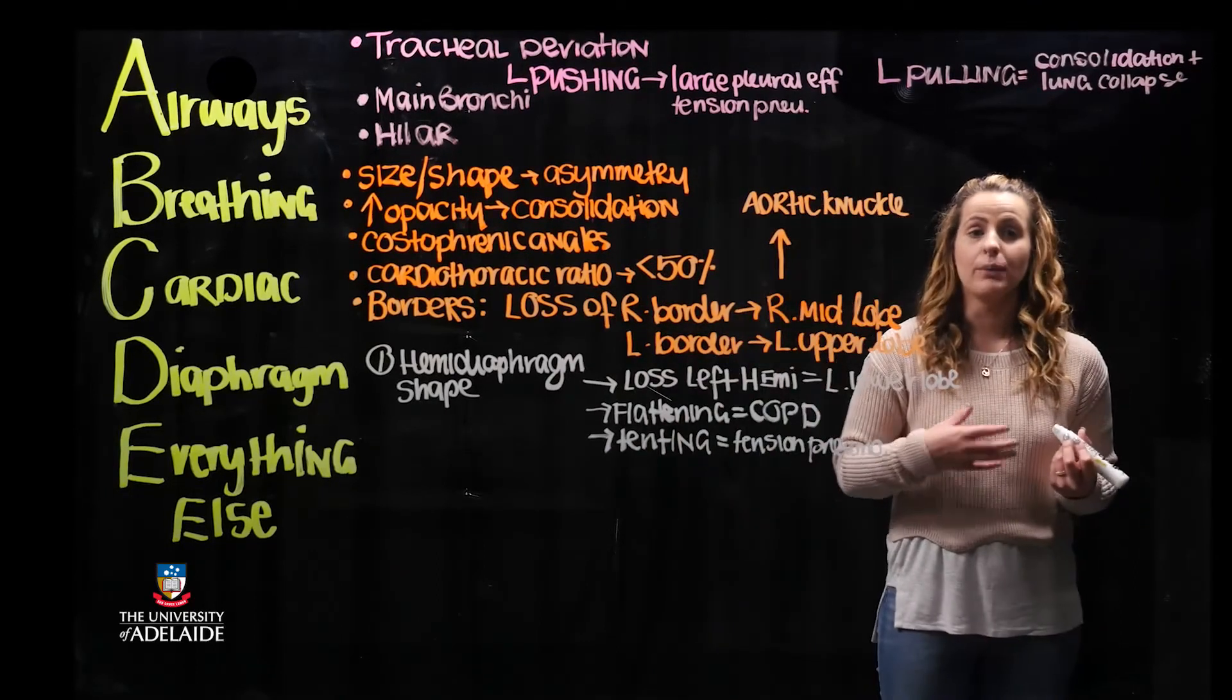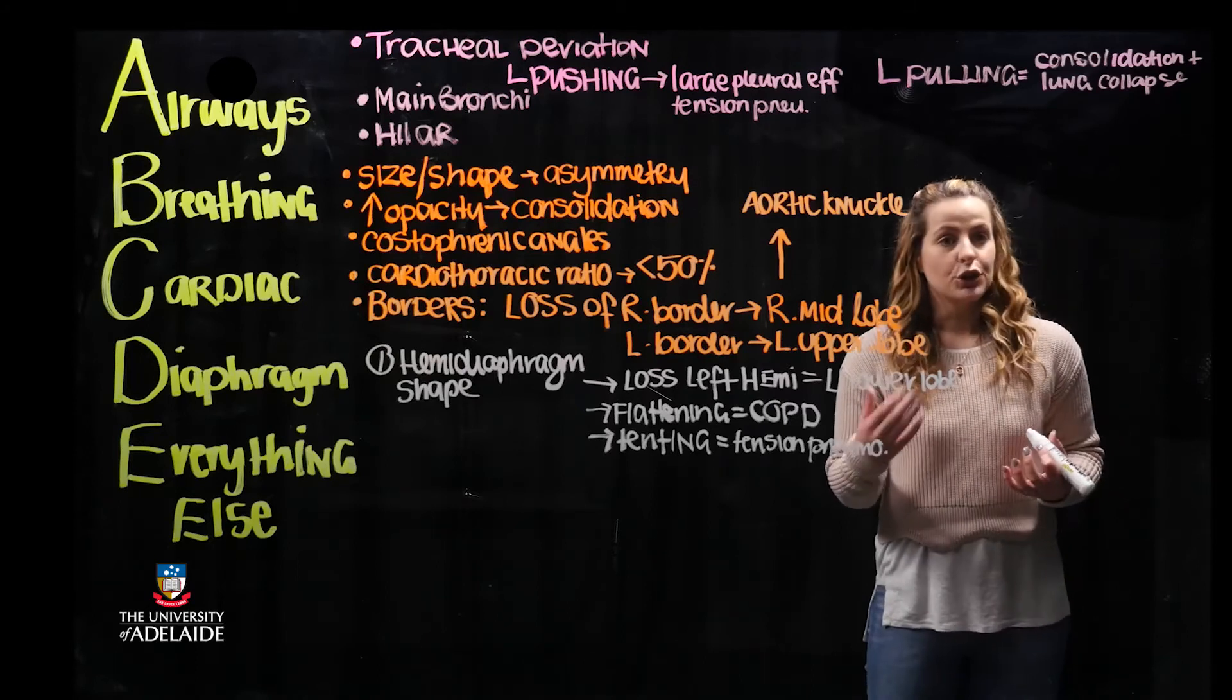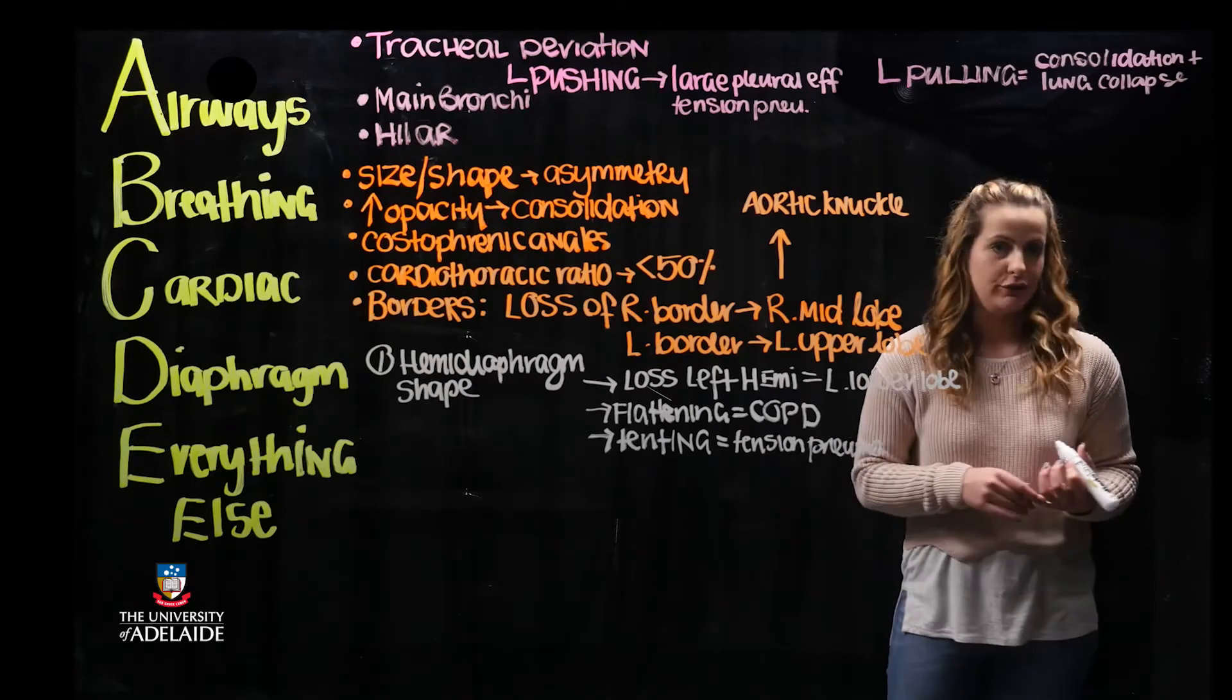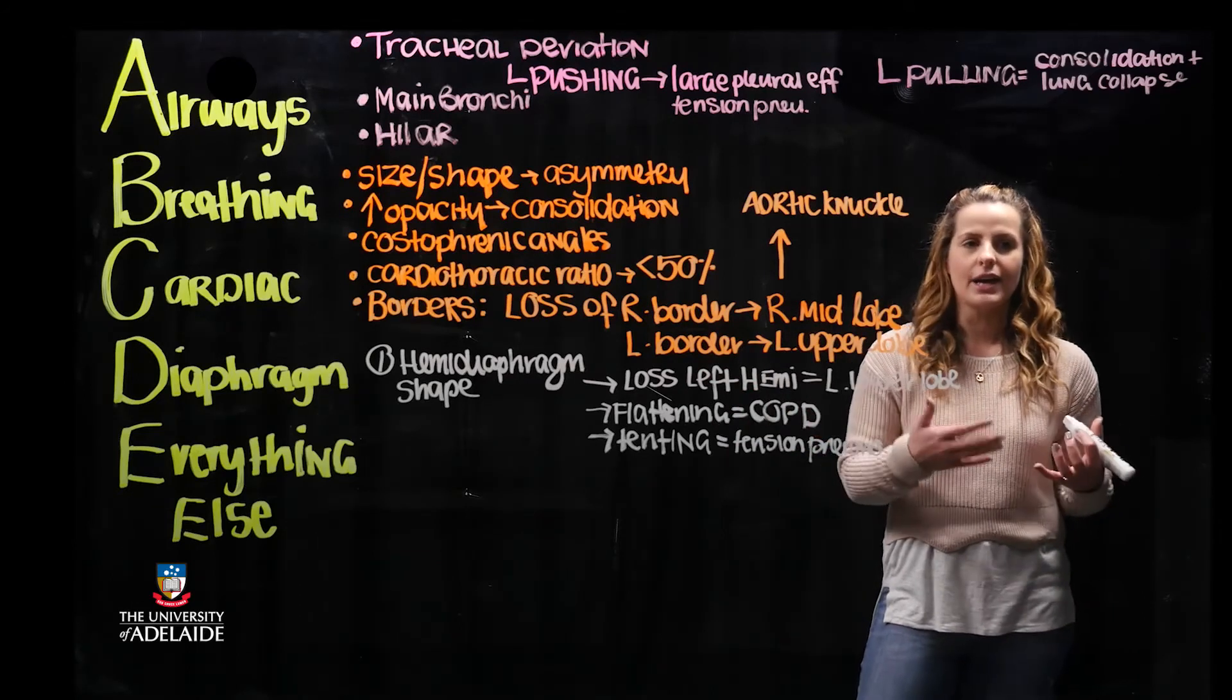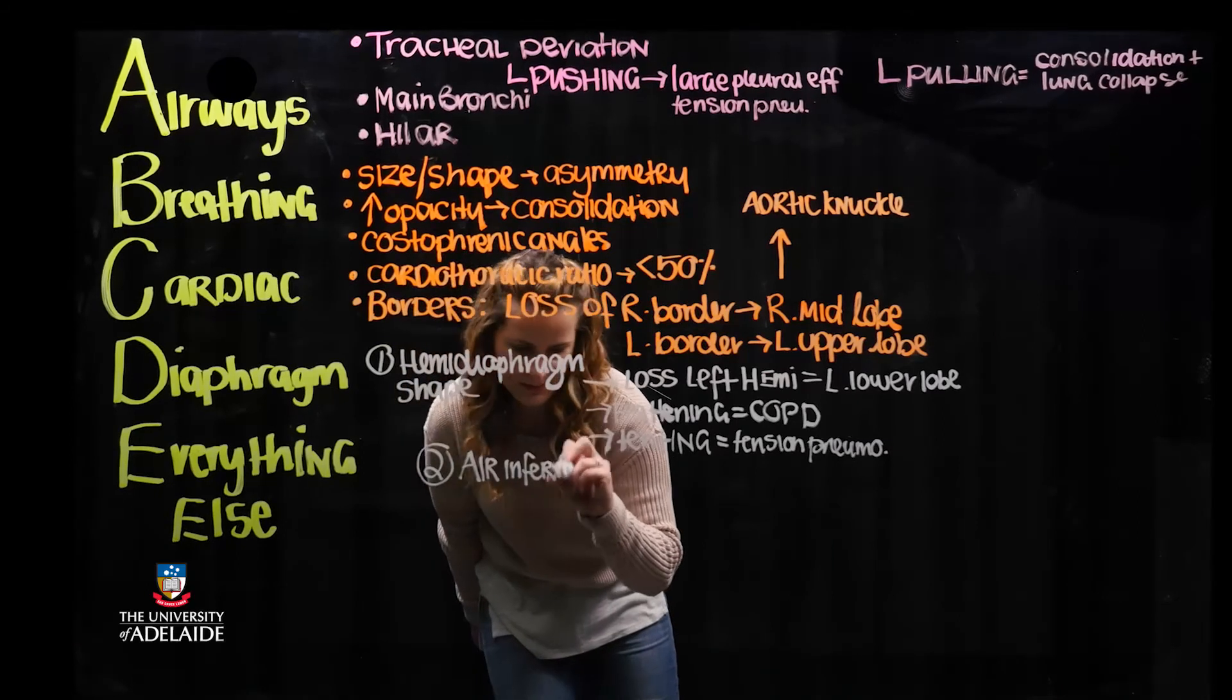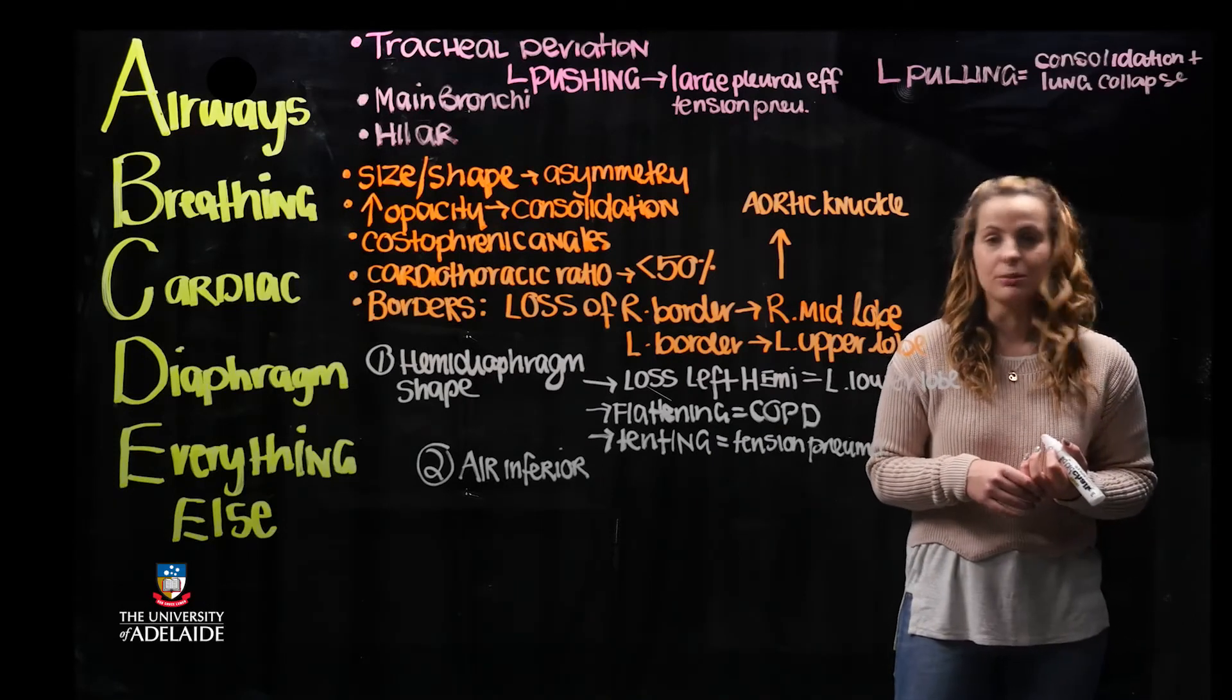Again with the diaphragm, you'd be looking or examining the costophrenic angles for blunting. Abnormalities associated with the costophrenic angles can be indicative of infection or pooling of interstitial fluid. And lastly, consider is there any air that is visible beneath or inferior to the diaphragm. This is more important in the case of pathology associated with the intestines and the close relation of these anatomical structures.